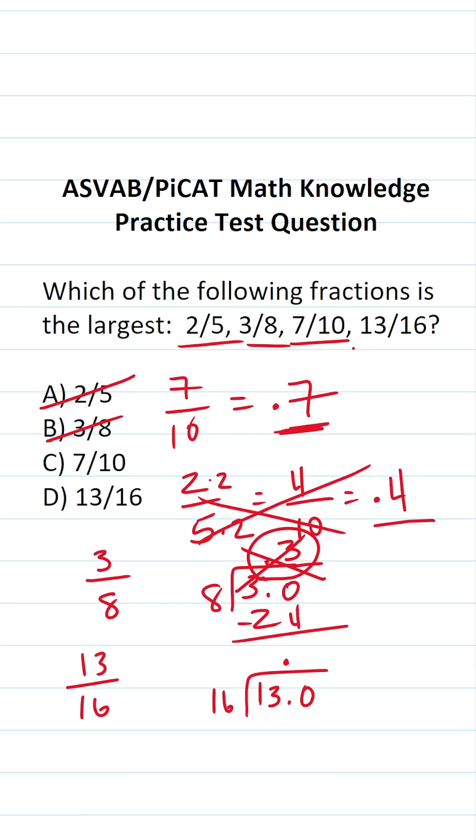If we know it's 8 times, we know 13/16 is going to be the biggest fraction. So what is 16 times 8? 8 times 6 is 48, carry a 4. 8 times 1 is 8, plus 4 is 12. So 16 times 8 is 128.